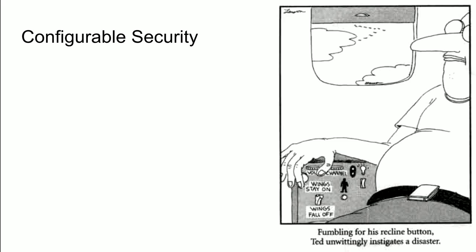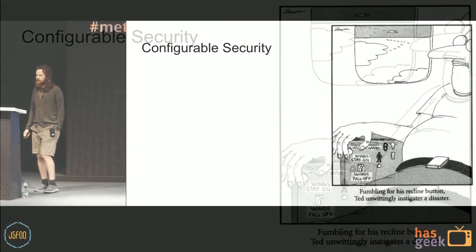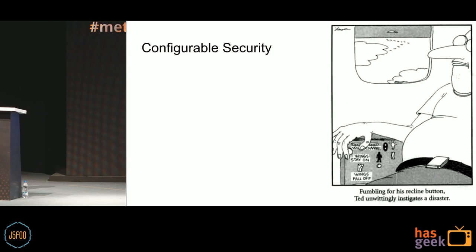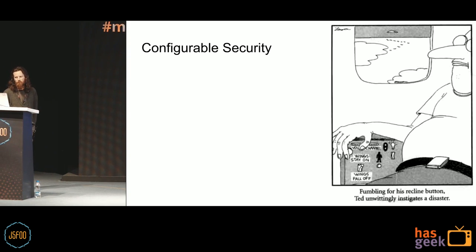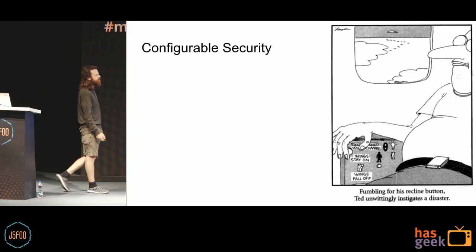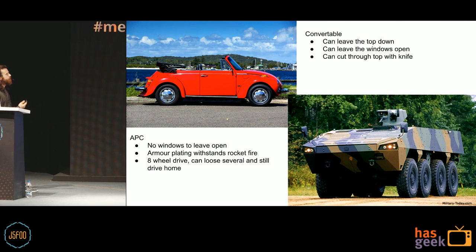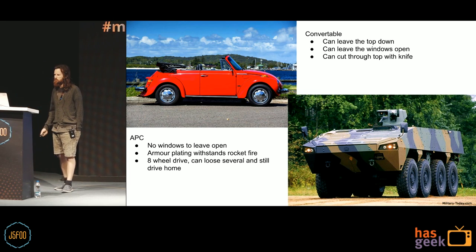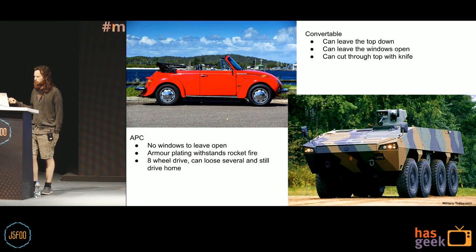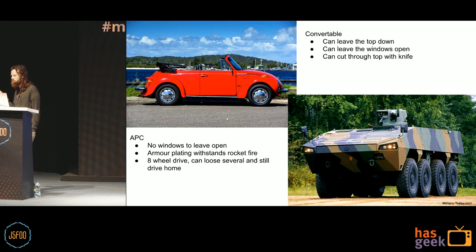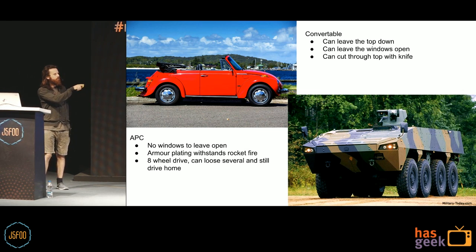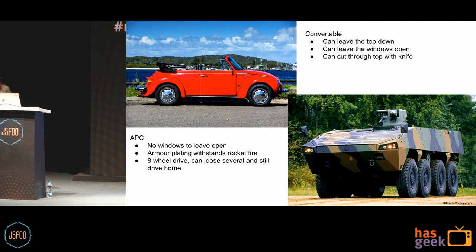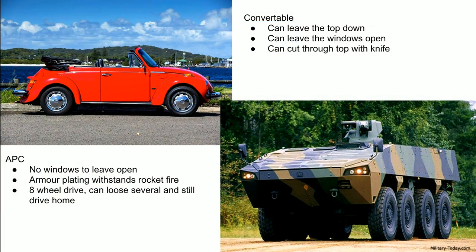That's an example of configurable security — this is actually how most airline disasters happen: human error. Imagine a switch: wings stay on, wings fall off — someone accidentally switches the wings off. Don't make security configurable. Think of a convertible: you can leave the top down, leave windows open, someone can cut through the walls. But with an APC armored vehicle, there are no windows to leave open, the armor plating can withstand rocket fire, and you have eight wheels that all drive — even if landmines go off, you can still drive home. That's the kind of security we want in software.